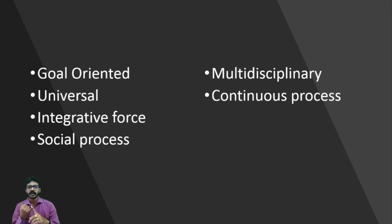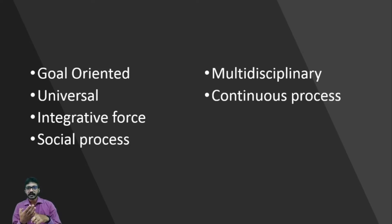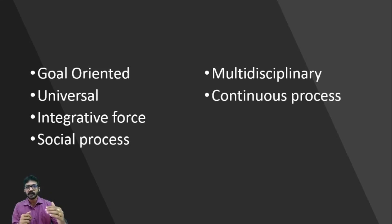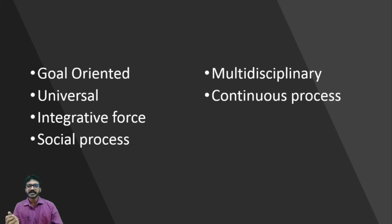The next point is: management is a continuous process. We set a goal at the beginning of the academic or financial year, plan how that goal is to be achieved, organize the required resources, then managers guide or direct the people — what we call actuating — and then control the entire process. Once a goal is achieved, we set up another goal or go one step higher in achieving further success, and the process is repeated. It is a never-ending process, which is why management is called a continuous process.